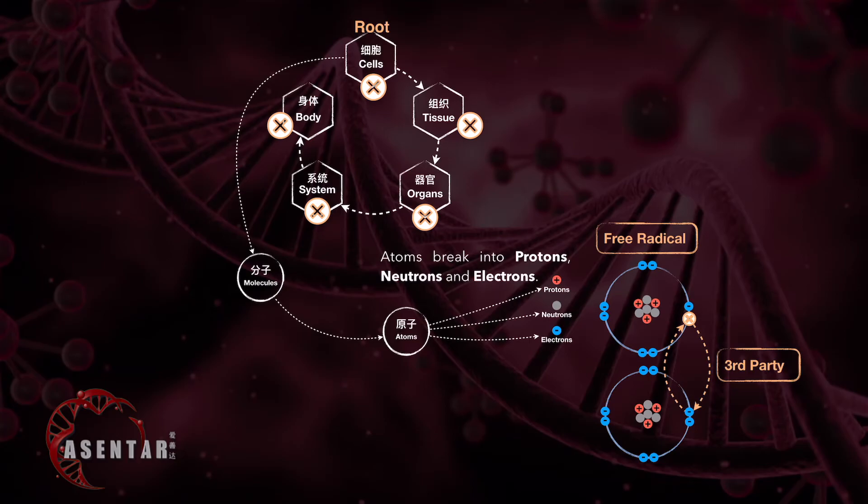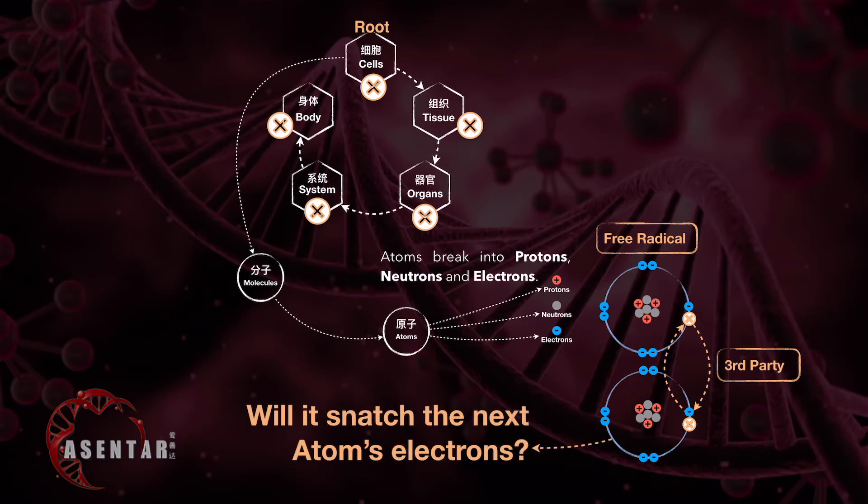They will continue to snatch. Now when that happens, will this particular broken family being snatched then snatch your next atom's electrons? Absolutely yes. Now imagine this: after 30, 40 years, trillions and trillions of cells in our body are doing the snatching and the third party action. What will happen to our entire body? Basically chaotic.